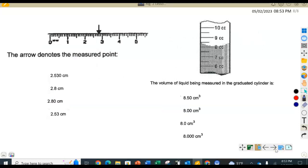All right, last two examples. This one says the arrow denotes the measured point. Again, we're in millimeters. So we know this is 1, 2, 3 centimeters. It's not quite to 3 centimeters. So there's 2.5, 6, 7, 8. So 2.8 centimeters.